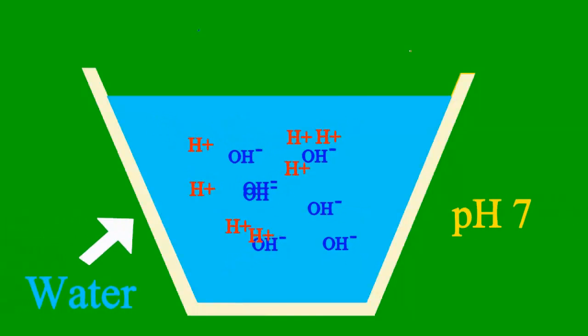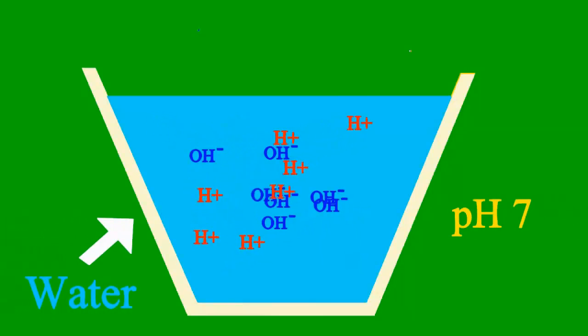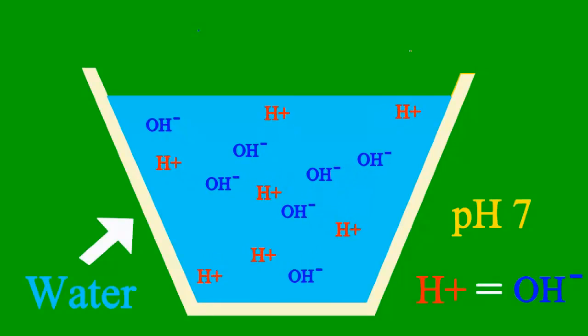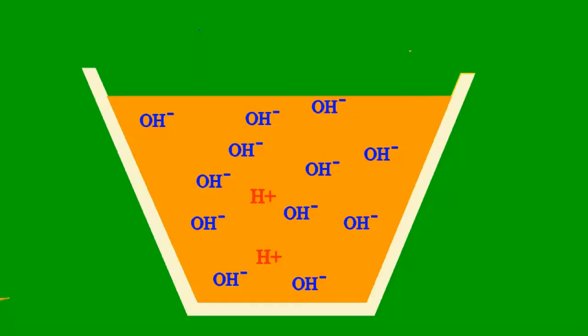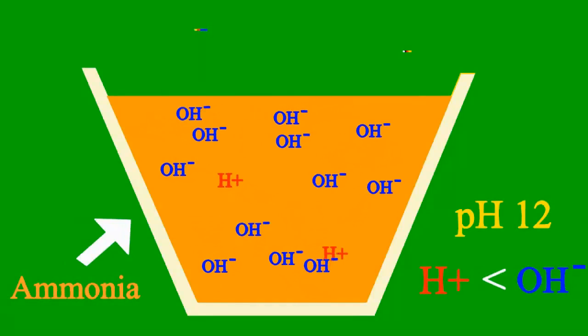When the pH is 7, then it's a case where the sample is neither an acid nor base. But less than 7, it's an acid, we say. More than 7, it's a base all the way.